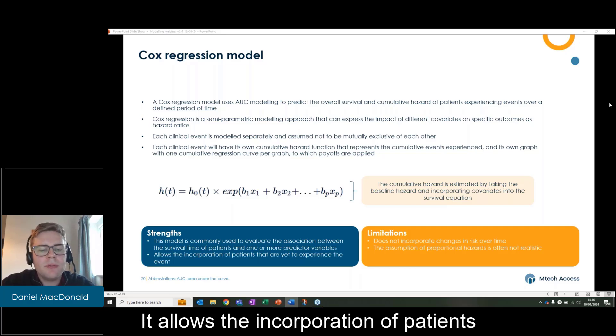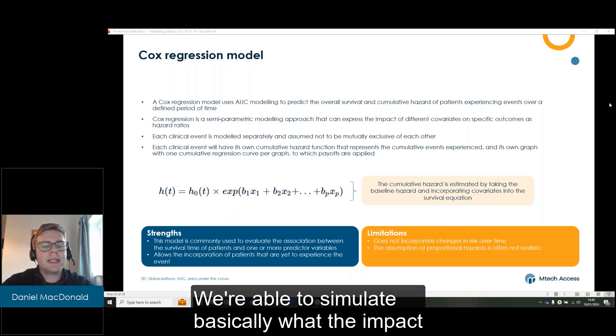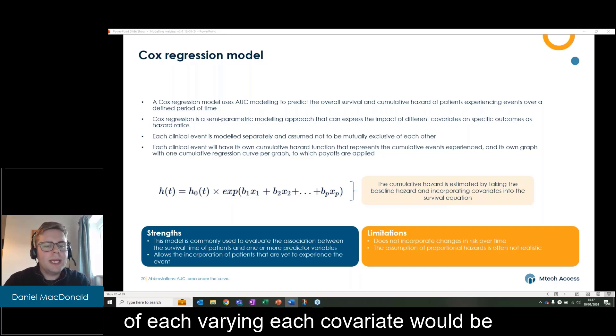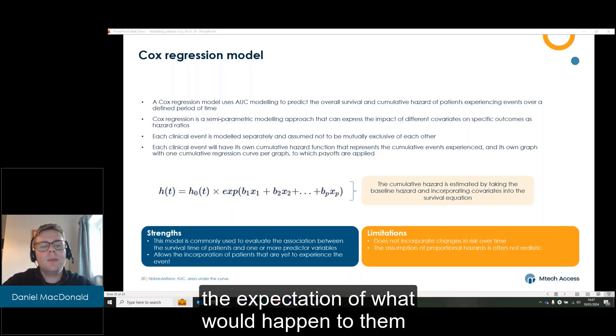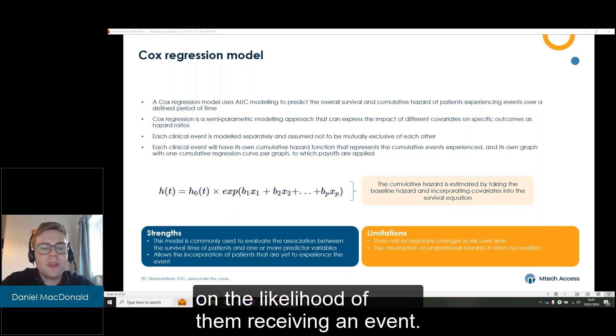It allows the incorporation of patients that are yet to experience an event. We're able to simulate basically what the impact of varying each covariate would be on the likelihood of survival and use that to incorporate future patients, the expectation of what would happen to them on the likelihood of them receiving an event.